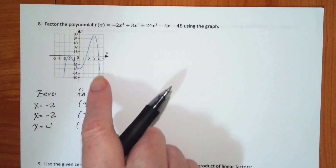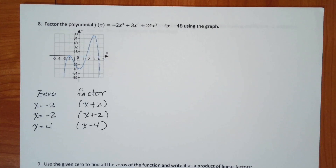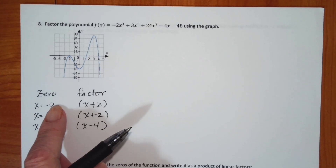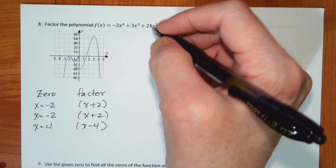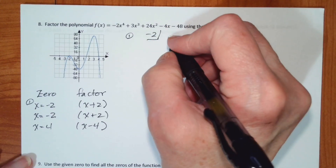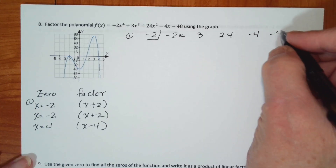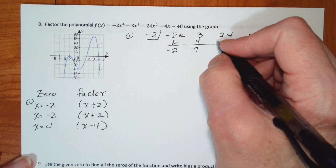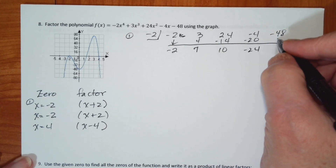This is a fourth-degree polynomial, so I need to find one more factor. I'm going to divide by x equals negative 2, then take the result and divide by negative 2 again. Starting synthetic division: negative 2 into coefficients negative 2, 3, 24, negative 4, and negative 48. Bringing down, I get 4, 7, negative 14, 10, negative 20, negative 24, 48, and remainder 0.